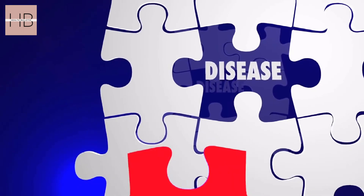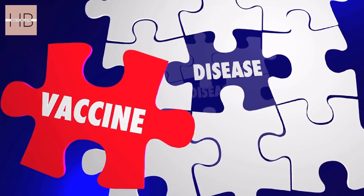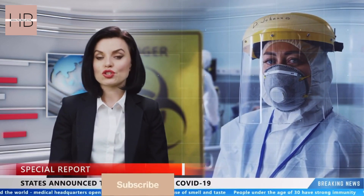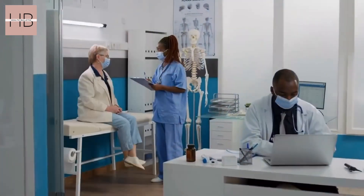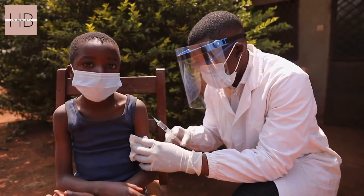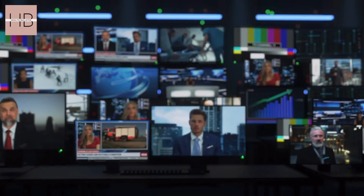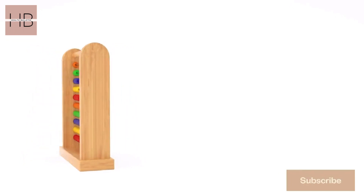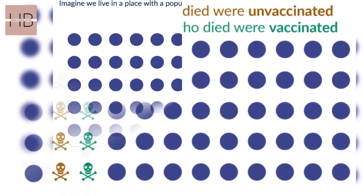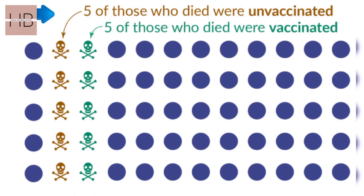But why do we need to compare the death rates between vaccinated and unvaccinated? During a pandemic, you might see headlines like "half of those who died from the virus were vaccinated." Based on such a headline, it would be wrong to draw any conclusions about whether the vaccines are protecting people from the virus. The headline is not providing enough information to draw any conclusions. Let's explore this with the following example. Imagine we live in a place with a population of 60 people. But this headline does not tell us whether the vaccine protects people or not.